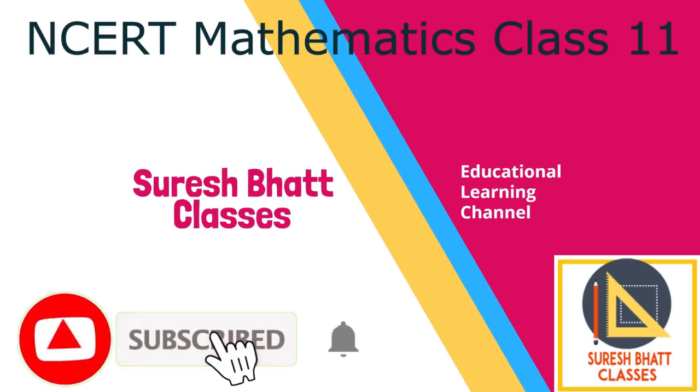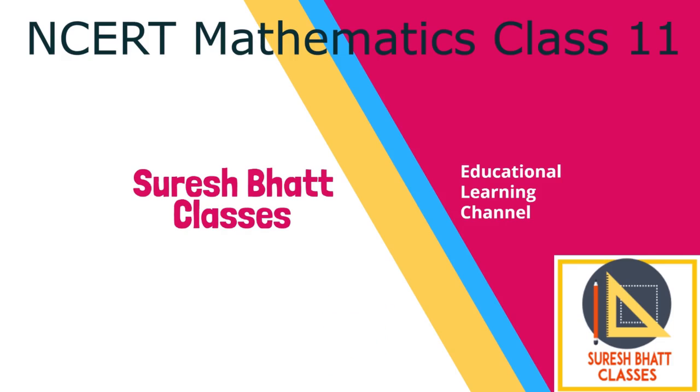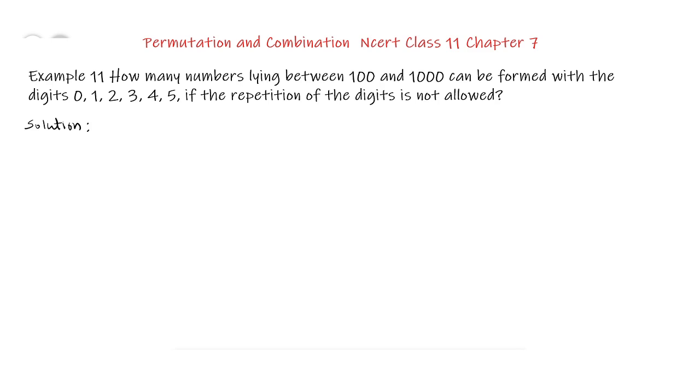Welcome to educational channel of Suresh Bhatt classes. We are going to solve permutation and combination NCERT class 11th chapter 7, Example 11. How many numbers lying between 100 and 1000 can be formed with the digits 0, 1, 2, 3, 4, 5 if the repetition of digits is not allowed?